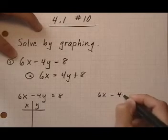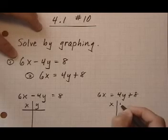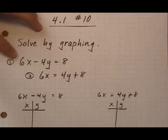6x equals 4y plus 8, so let's make a chart for that one, and then we'll make a graph and see where the lines intersect, if they intersect.